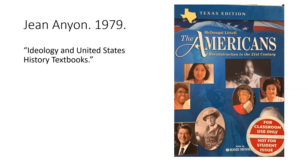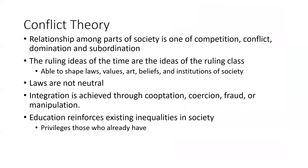We're beginning the final set of readings for the unit on conflict theory. I've asked you to read Anion's piece, published in 1979, which is pretty dated but still quite relevant. I'm going to show you excerpts from a regular U.S. history book for juniors used in the late 2000s, early 2010s, and you'll see that not much has changed. Let's begin with revisiting some ideas from conflict theory.